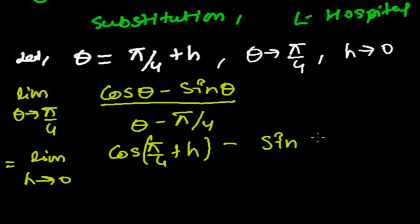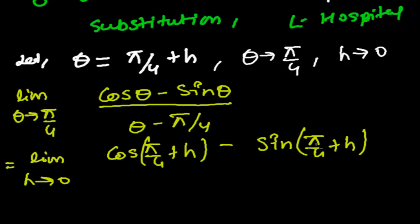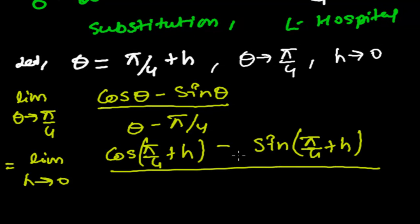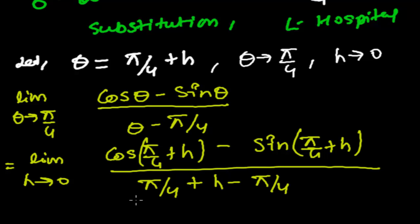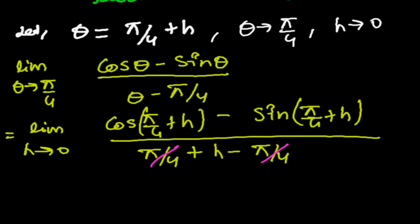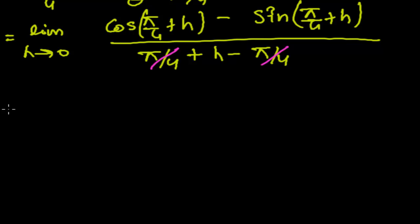In the place of sine theta we write sine(pi by 4 plus h), and the denominator becomes pi by 4 plus h minus pi by 4. The pi by 4 terms cancel, so the denominator is simply h.